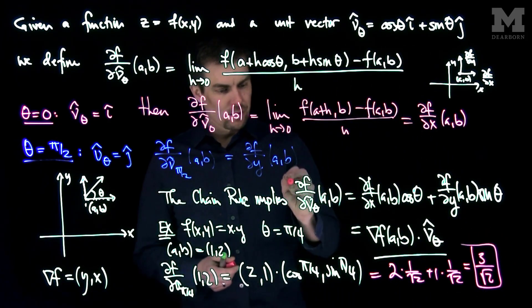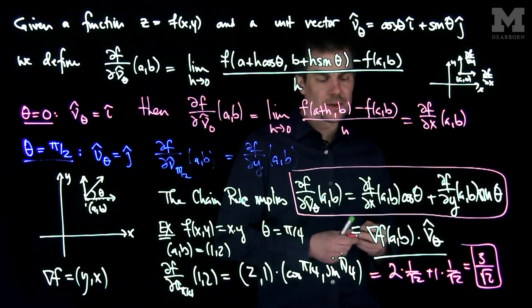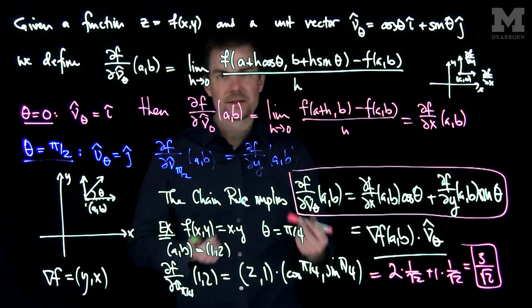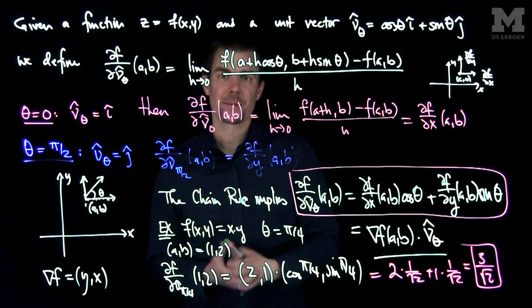So this directional derivative can be computed using this formula over here, and it's really just the gradient of f at the point dot the vector in question, and this tells us the rate of change of the function in any direction. Thank you very much.